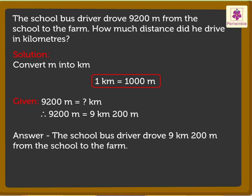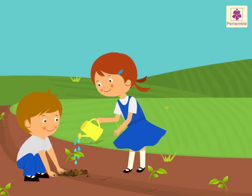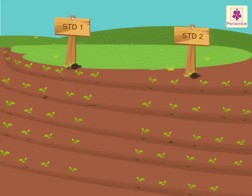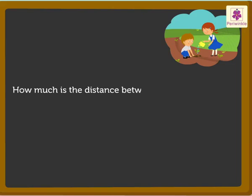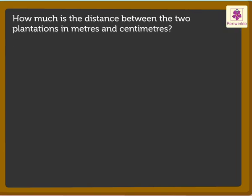Now it's time to plant some trees. The children of standard one and two have planted the saplings over a distance of 785 centimeters from each other. How much is the distance between the two plantations in meters and centimeters? To find the answer, we need to convert centimeters into meters and centimeters.